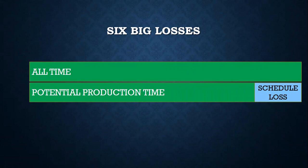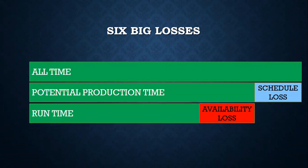The next loss from available time is availability loss — loss incurred due to downtime, lunch, tea break, etc. The remaining time is called runtime, or the time in which production is performed.